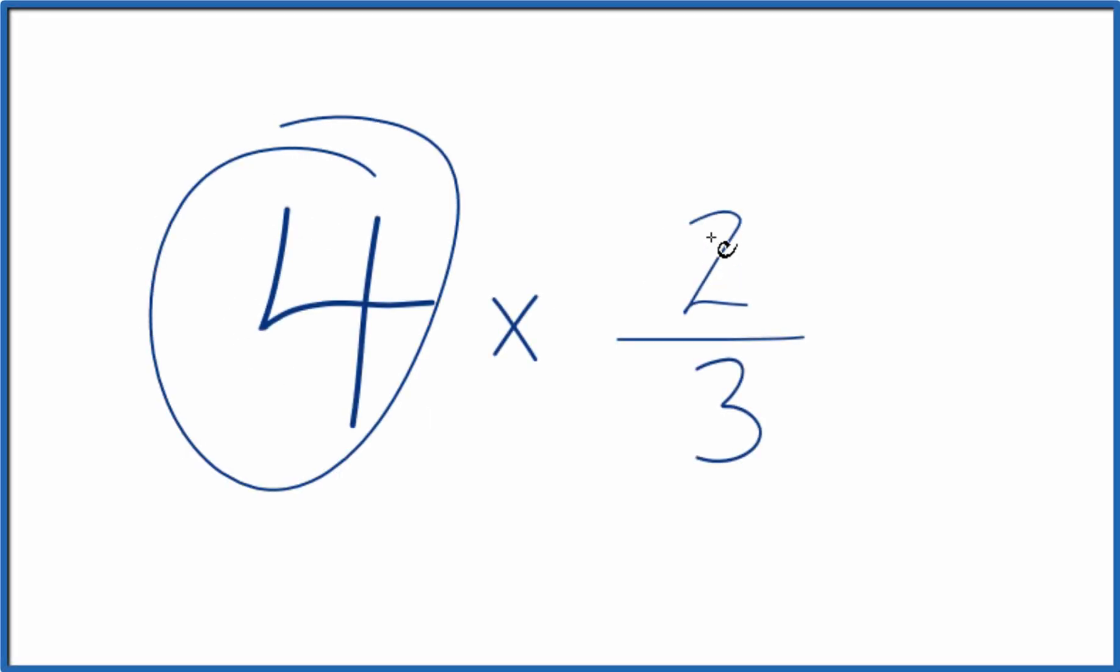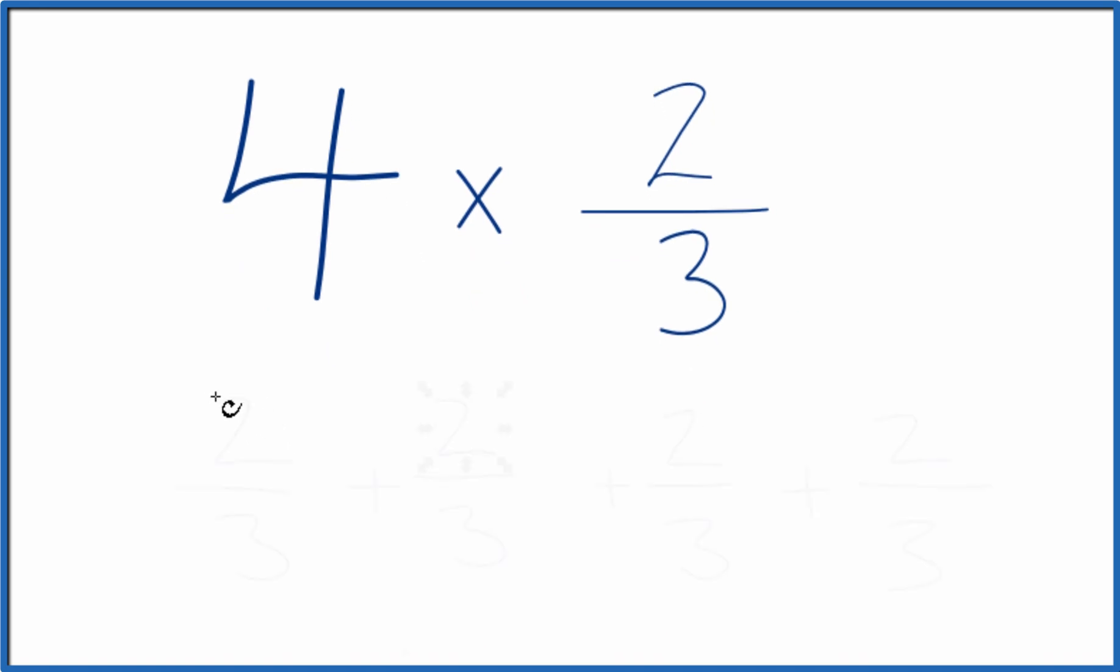Here's how you multiply 4 times 2 thirds. So first off, we could think of it that we have 2 thirds 4 times. Just add them together, like this.